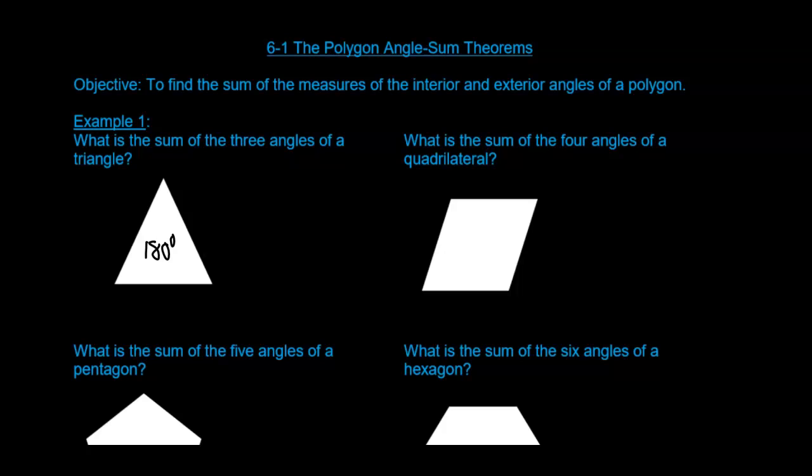Welcome to chapter 6. This is the first section: Polygon Angle Sum Theorems. We are going to be finding the sum of the measures of the interior and exterior angles of a polygon.